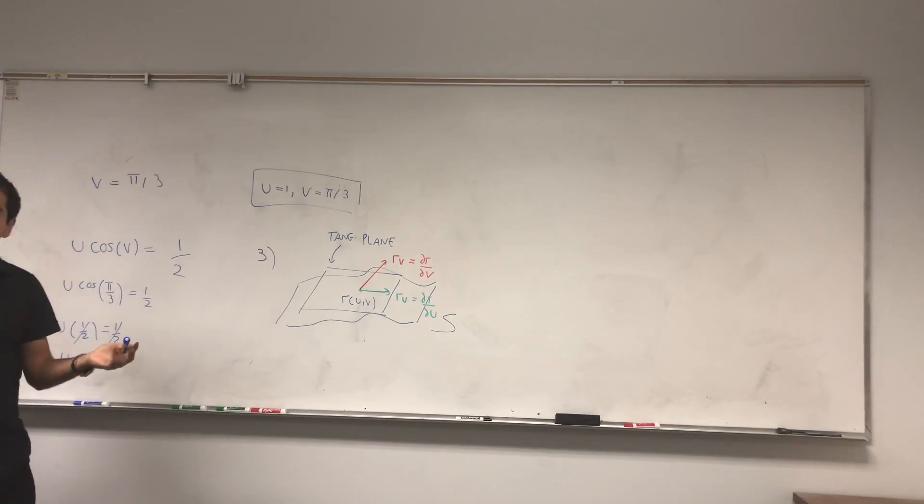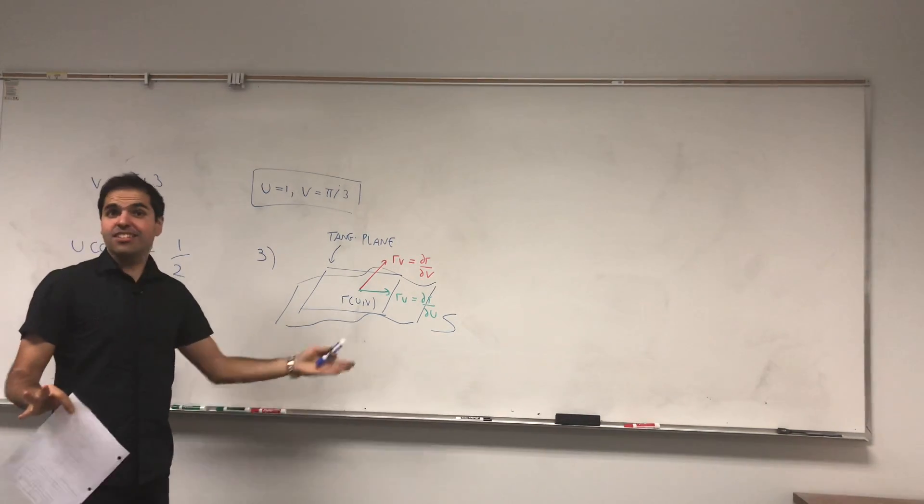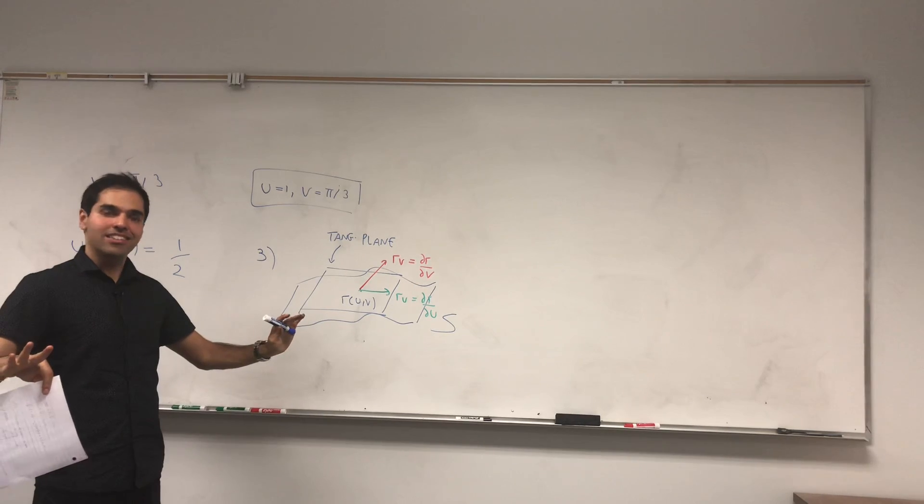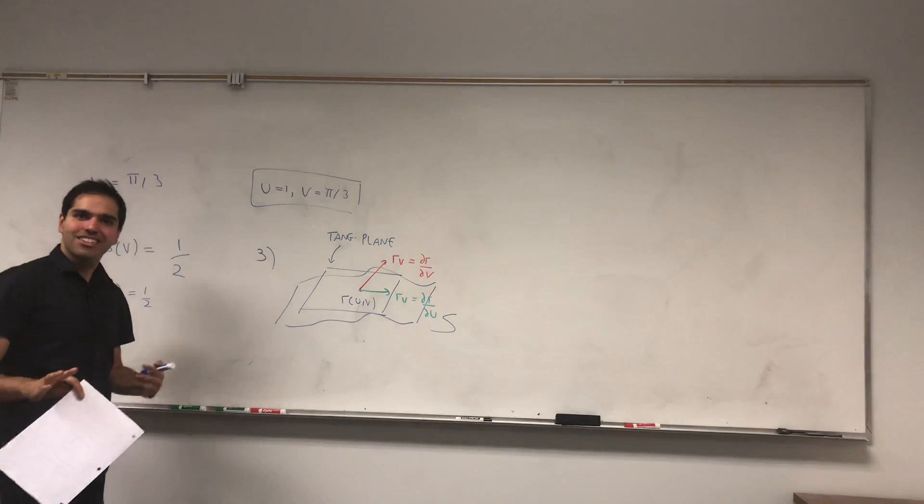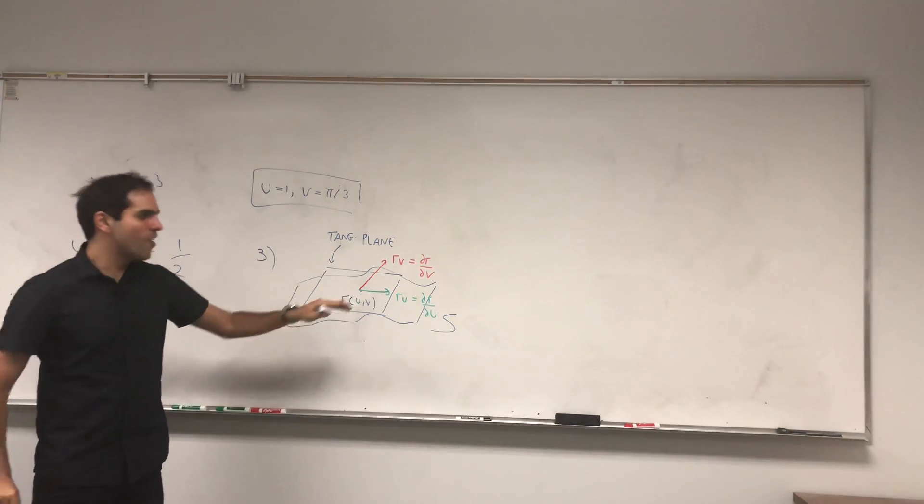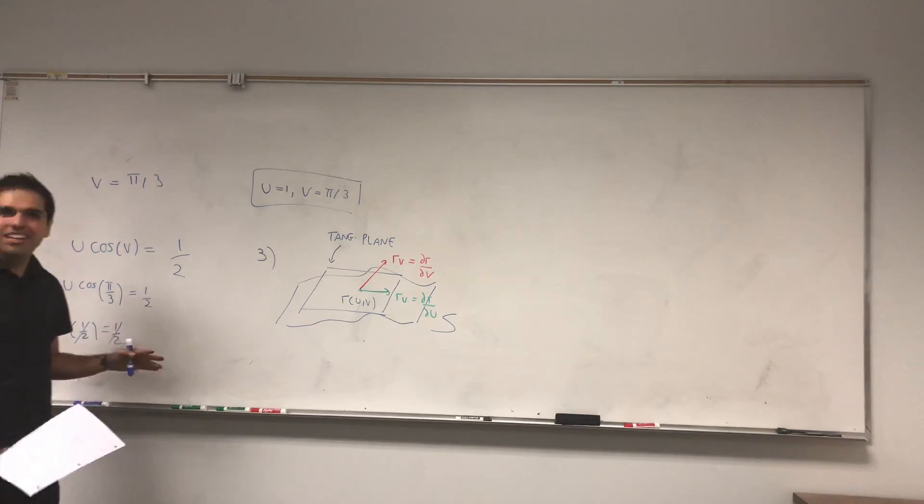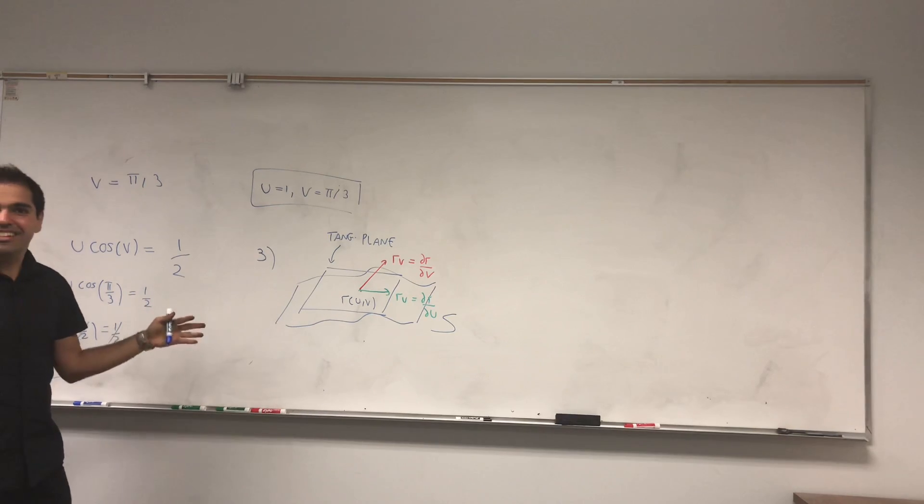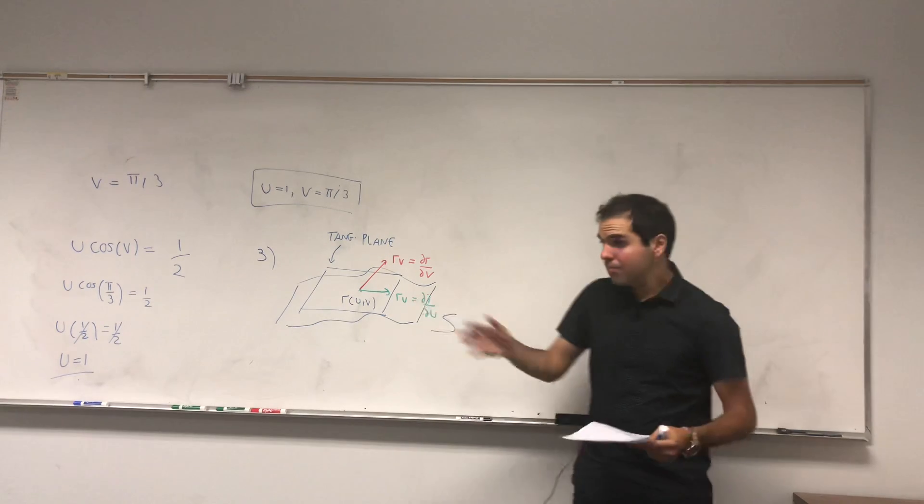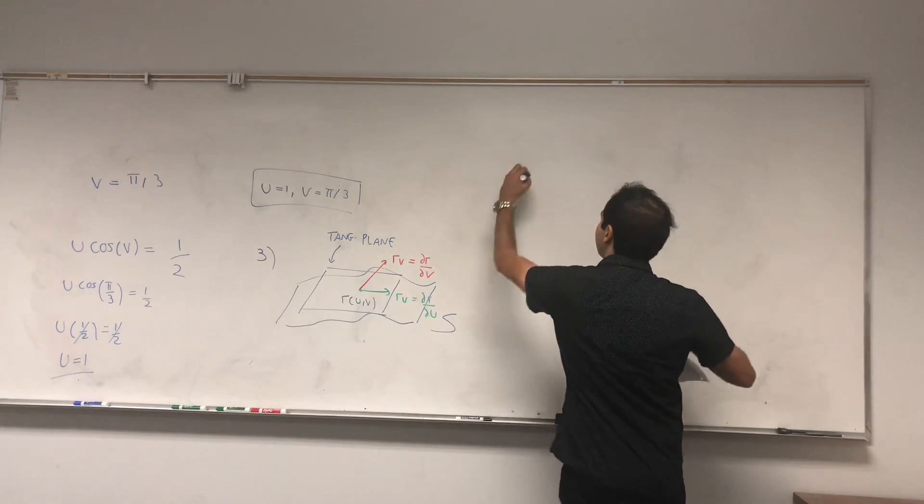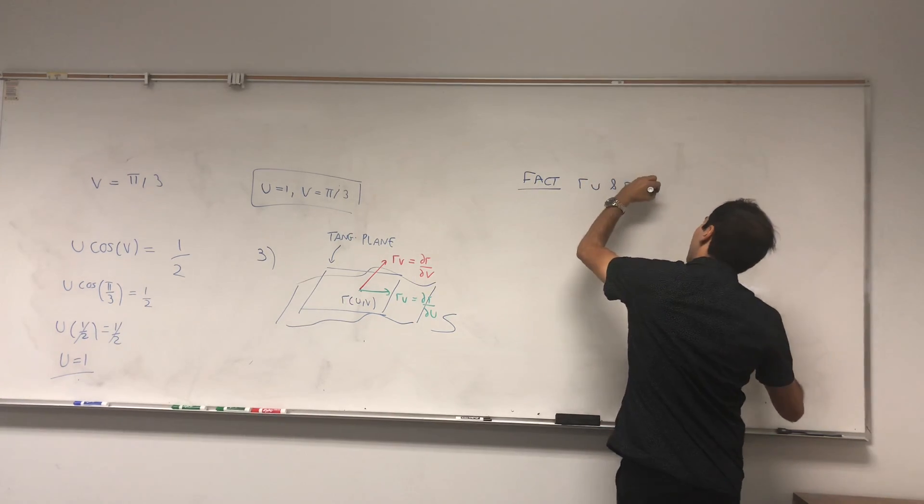Now, you might say, shouldn't it be r_x, r_y? Well, if S is the graph of a function, then yes, it's r_x and r_y. But the problem is sometimes your surfaces, they're not functions. That's why you really need Ru and Rv. And it could also happen that those two vectors are linearly dependent. But then, that's like a degenerate case, if you will. Okay, so fact. Ru and Rv are on the tangent plane.